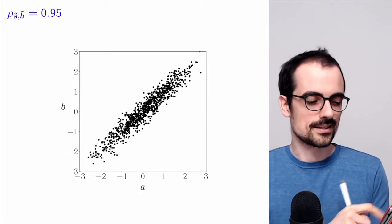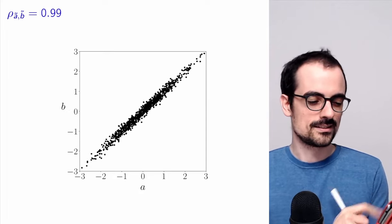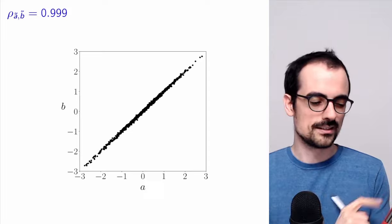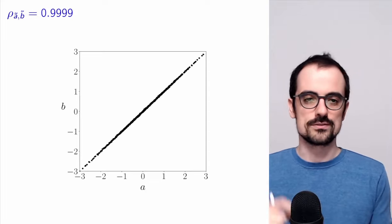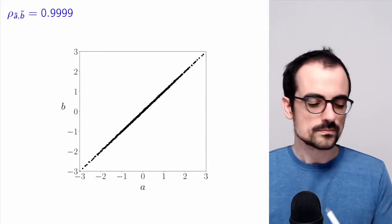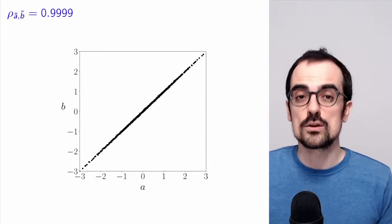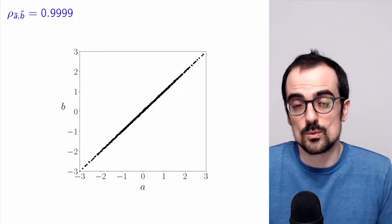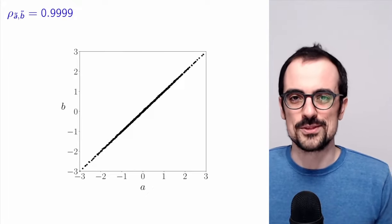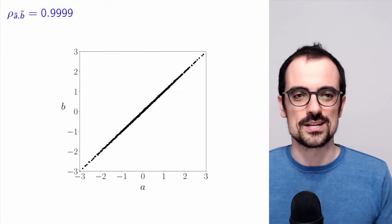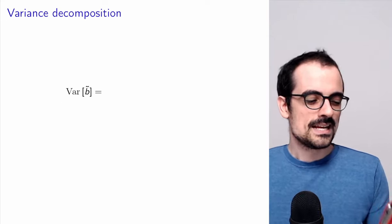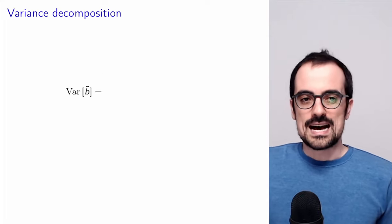We can see that as we push the correlation coefficient toward one, the data ends up almost exactly on a line. These properties are proved in the individual video on properties of the correlation coefficient.